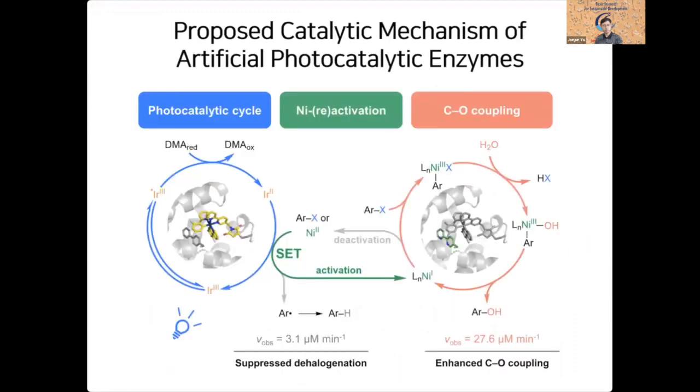We did a lot of kinetic analysis and mechanistic studies, but I'm going to skip those data. But I'd like to share our proposed catalytic mechanism of artificial photocatalytic enzymes. We believe that the iridium catalyst that we installed within the protein environment can be activated upon blue LED light and become this iridium 3 excited state. And then this species can react with the sacrificial reductant and form an iridium 2 state. And we believe that this species is a very powerful reducing agent, can transfer the electron to nickel bipyridyl species.